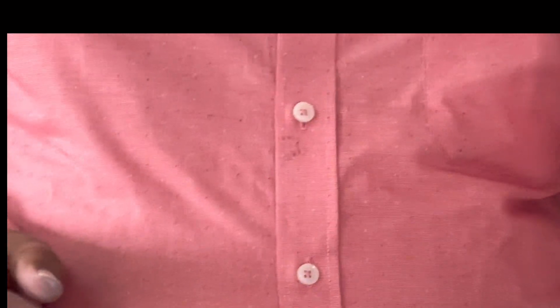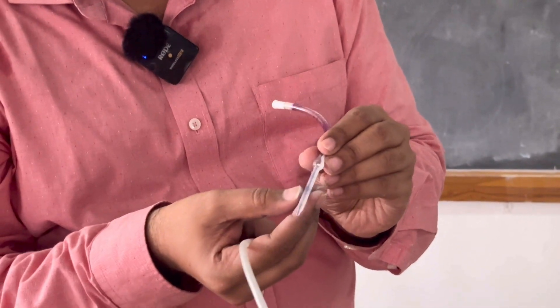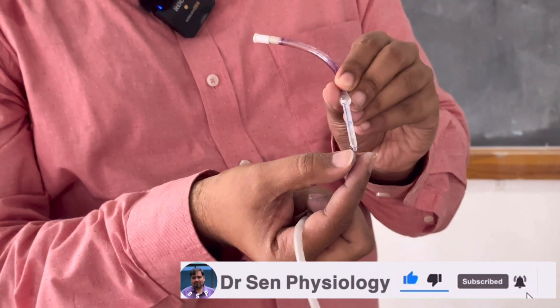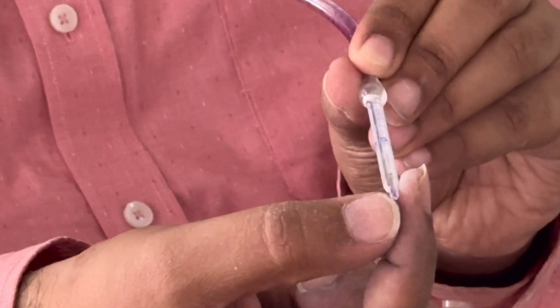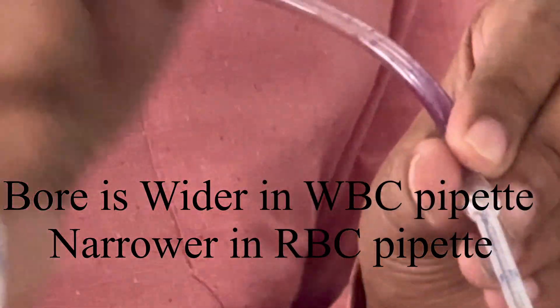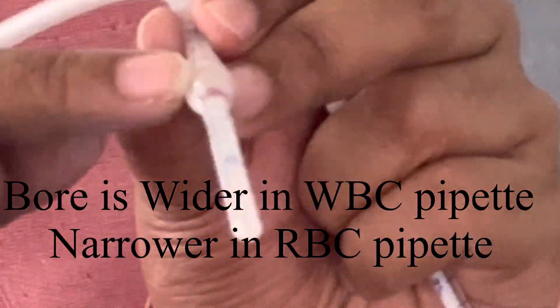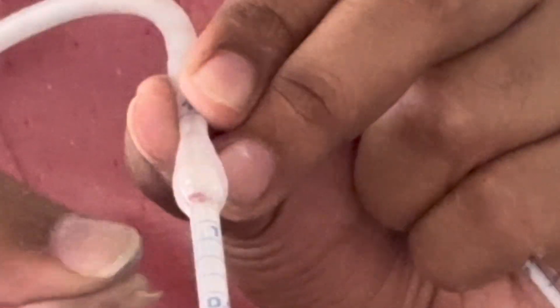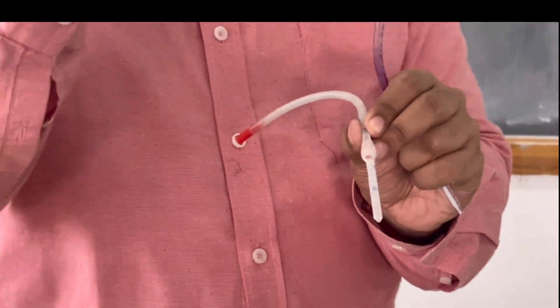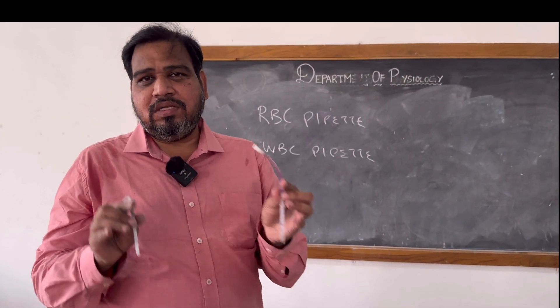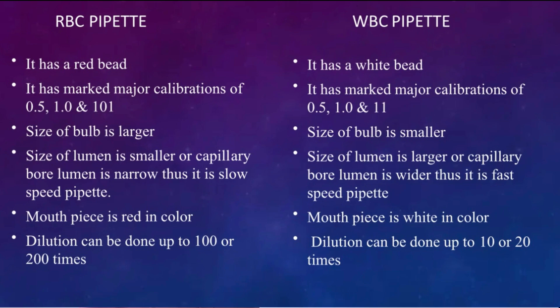Watch the pipette — you can clearly understand the bore, that is called bore, through which the blood enters. You can see the hole — this is wider in WBC pipette. Remember WW: Wide bore for WBC pipette, through which the blood is going to come. And for RBC pipette, the bore through which the blood comes is narrow. So WW — Wide bore for WBC — is the mnemonic you can remember. So these are the differences between RBC and WBC pipette.